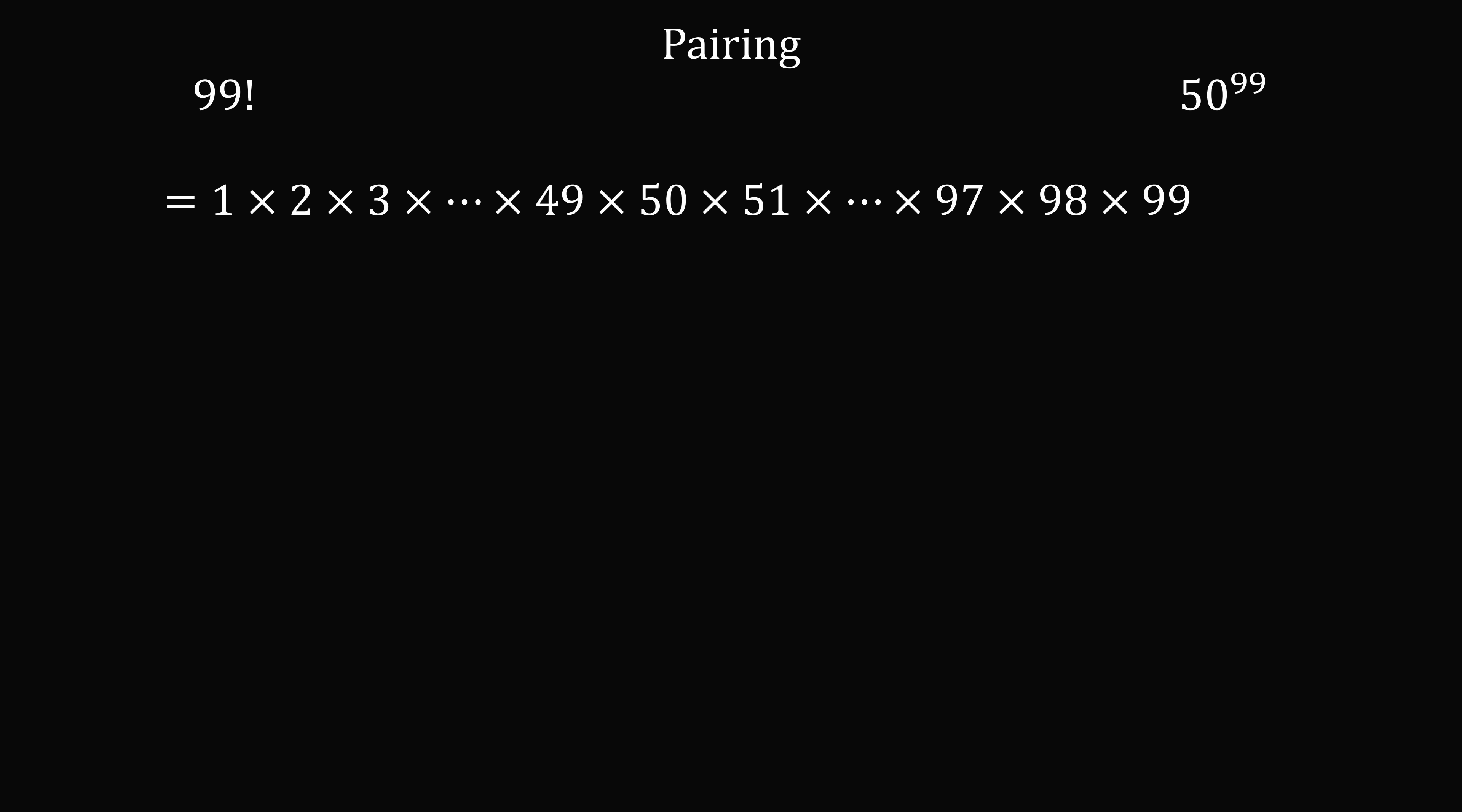So 99 factorial is equal to the product of the whole numbers from 1 to 99. Now let's pair 49 and 51.